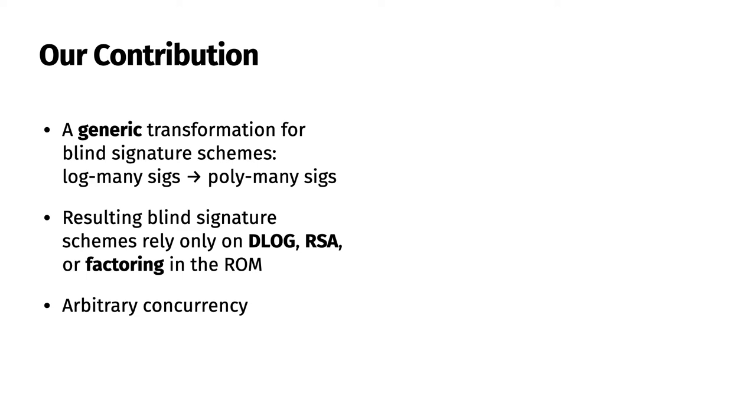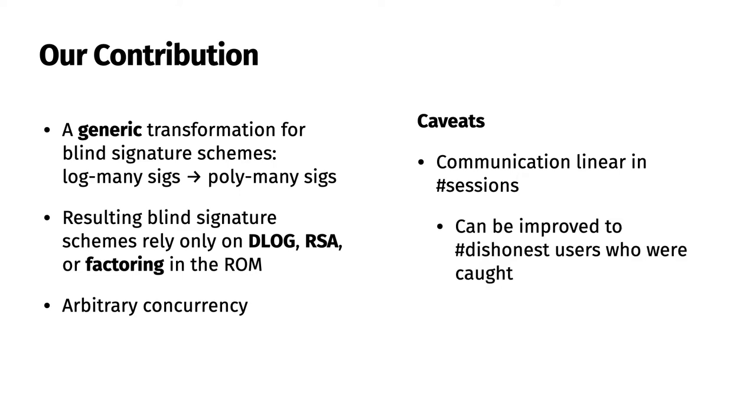Our transformation does come with caveats, however. First, the communication complexity depends on how many signatures have already been computed. This can be improved, however, to just being linear in the number of dishonest users who are caught being dishonest. We explain what this means later. The second caveat is that the estimated group size necessary to achieve 128-bit security is approximately 5,000 bits.